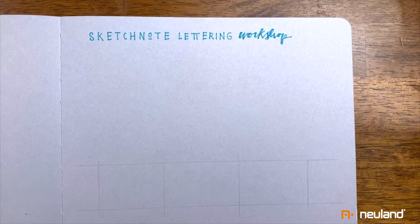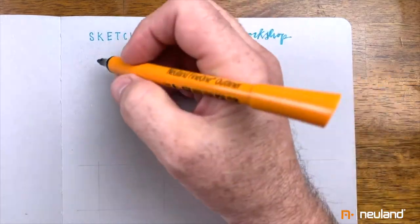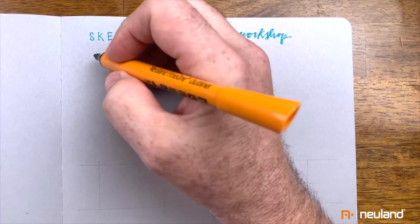The first thing we're going to do is two-line lettering. So two-line lettering was something I developed and I observed myself doing.